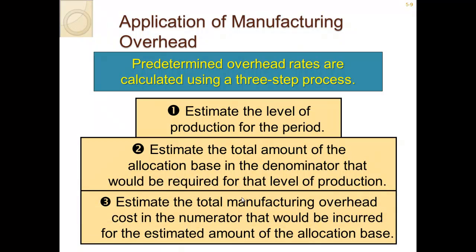Predetermined overhead rates are calculated using a three-step process. First, estimate the level of production. Second, estimate the total amount of the allocation base required for that level of production — how many products will be produced this month or year. Third, divide the estimated overhead costs by that allocation base to get the estimated manufacturing overhead cost per unit, which is then used to allocate overhead when pricing jobs.